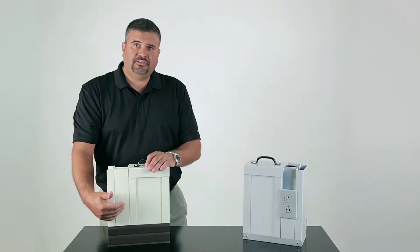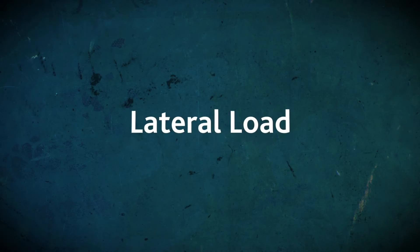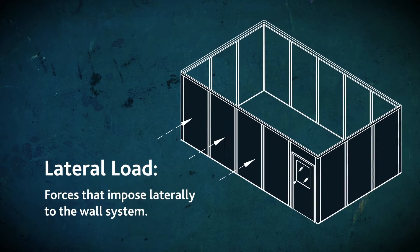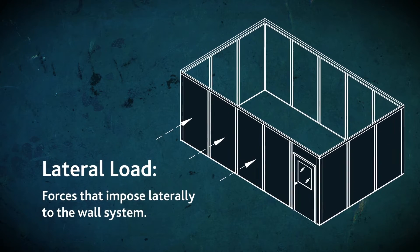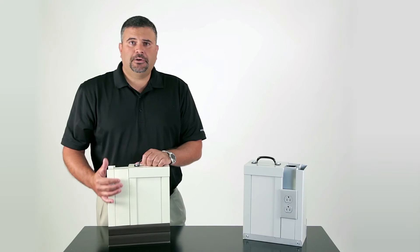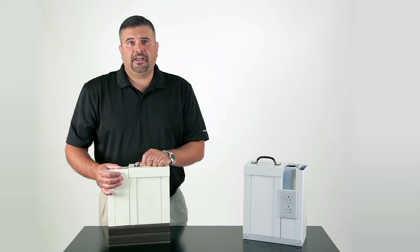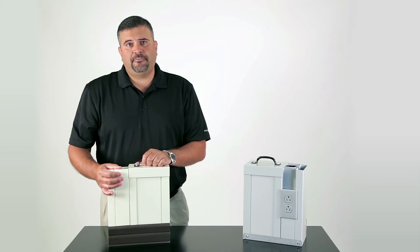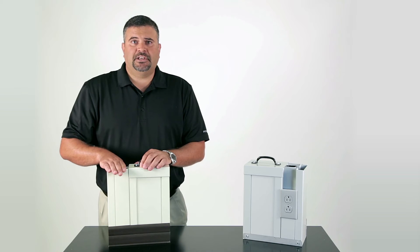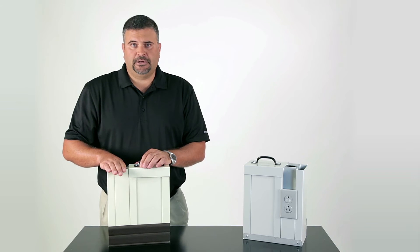The next design criteria is lateral load. Lateral loads are forces that impose laterally to the wall system. Building codes say that you need to build based on five pounds per square foot lateral load on any wall that's over 60 inches tall, and this post provides us the ability to meet that five-pound lateral load criteria.